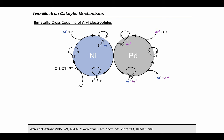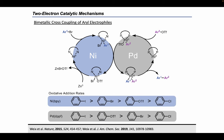The cross-coupling selectivity hinged upon the differential rates of oxidative addition for various aryl electrophiles with nickel and palladium. The researchers established that aryl triflates and aryl bromides showed selective oxidative addition to palladium and nickel respectively. Transmetallation of the aryl bromide fragment yielded the bis-aryl palladium(II) species, which then underwent reductive elimination to furnish the product, while the nickel(II) salt was reduced via a zinc additive.